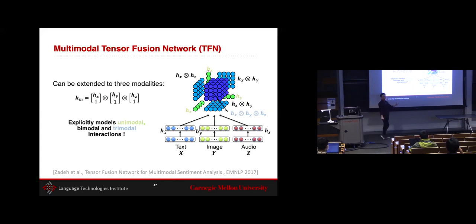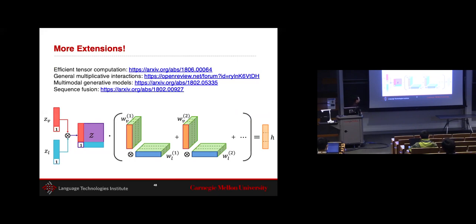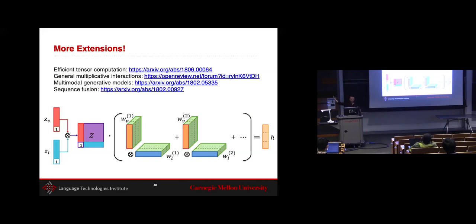There are further extensions: since high-dimensional tensors are very difficult to learn, there are low-rank approximations to make them faster, and generalizations called multiplicative interactions of arbitrary order for learning joint representations. There's also work on sequence fusion — when you have language and visual sequences, how do you perform fusion into joint representations across time.